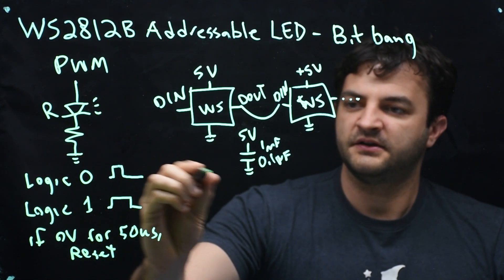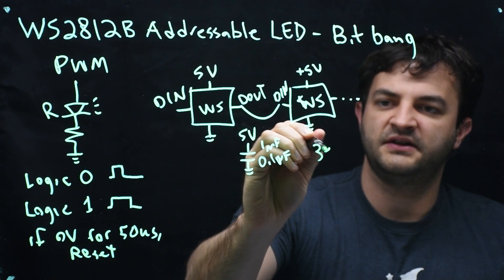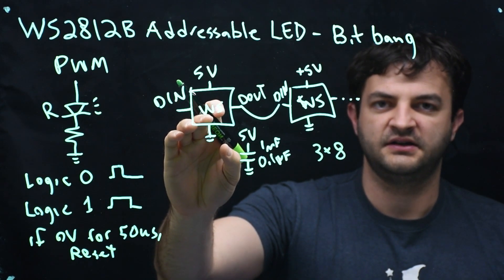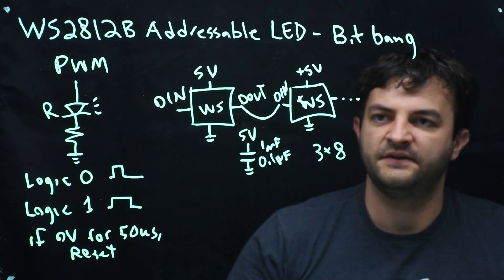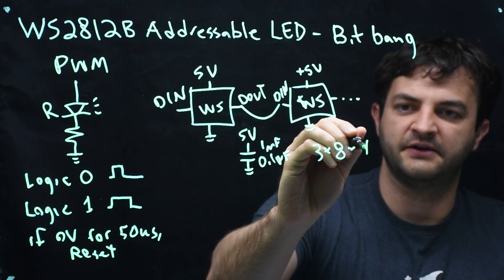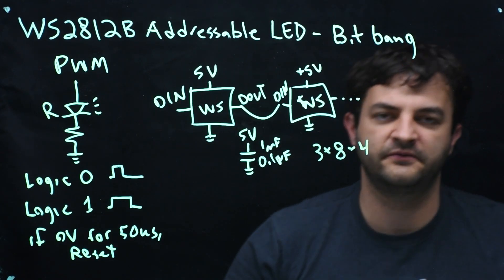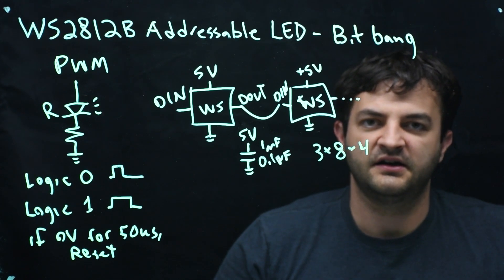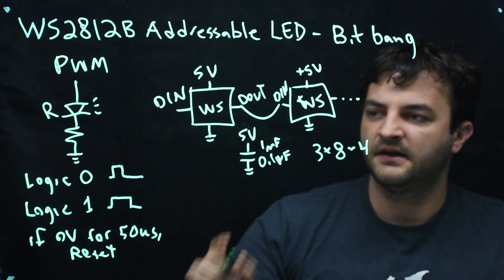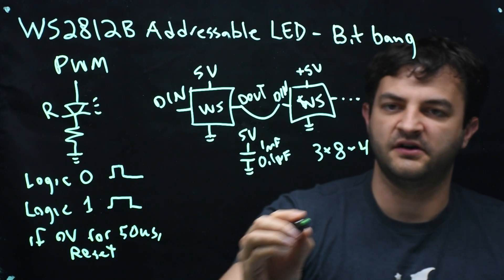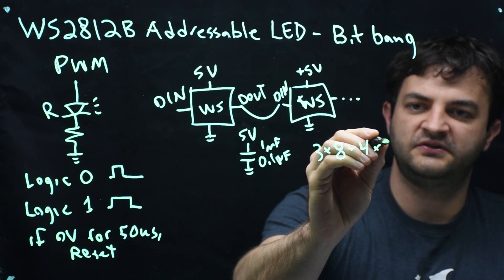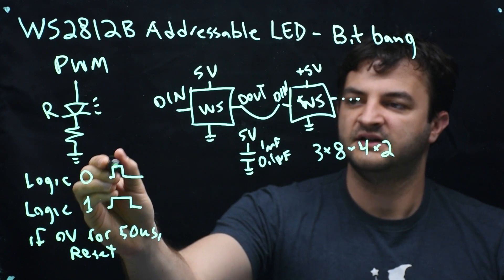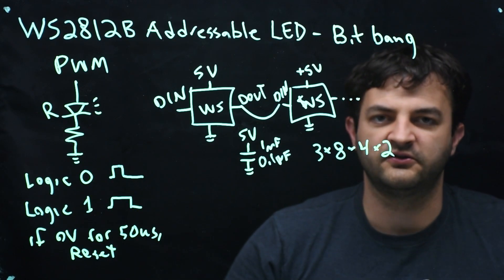We've got 3 times 8 bits for each WS2812B. That represents the color. Then we'll have, in this case four, chips in a row, but we could have more or less. So this is the number of bits that it would take to represent the color of all four LEDs. But each one needs a time that's high and a time that's low. So we'll have two states per bit. This is the number of states that we're going to have, how many high and low transitions there will be per bit.